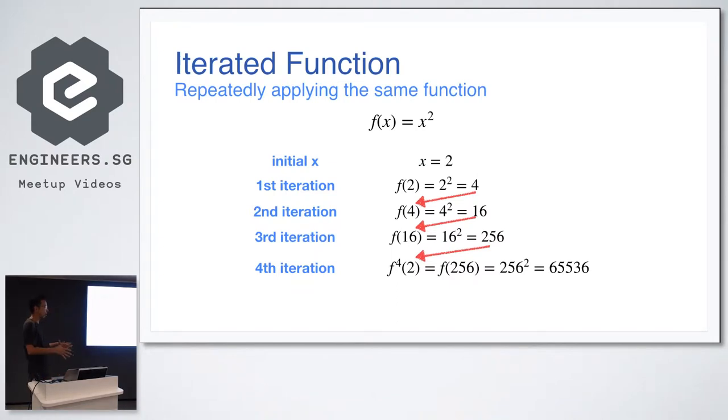Iterative functions. So we know about functions, it's just mapping between input and output. Iterative functions just repeatedly applying the same function again and again. So take an example, initial value of x. Taking the function x square, initial value of two. In the first iteration, we plug in the initial value of two and we get four out. In the second iteration, we plug in four and then we get 16. And so on and so forth.